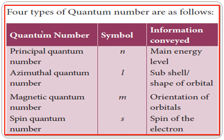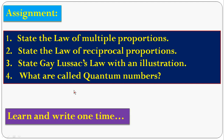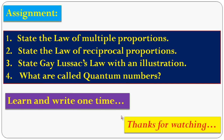These are the four types of quantum numbers. Okay, that's all students. Now you come to the assignment. The first question: state the Law of Multiple Proportions. The second one: state the Law of Reciprocal Proportions. The third one, very important: state Gay-Lussac's Law with an illustration, meaning examples. The fourth one: what are called quantum numbers? You have to learn and write these questions one time. Okay students, thank you.